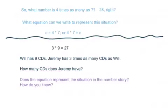Let's try another one. 3 × 9 = 27. Okay, so there's your equation starting off this time with the equation. Let's look at the story. Will has a number problem, I should say. Will has 9 CDs. Jeremy has three times as many CDs as Will. How many CDs does Jeremy have? So does that equation that's up above represent the situation in the number story? How do you know? Try and figure that out. Write the answers down for yourself to those questions. Make your brain work for you there. See what you come up with and when you think you have it, come on back.